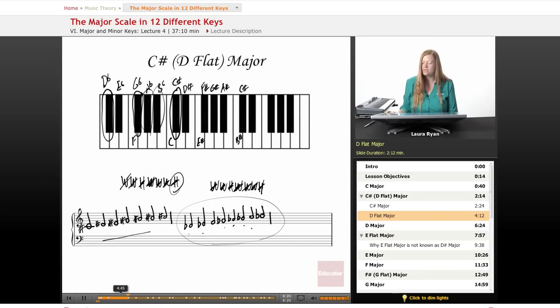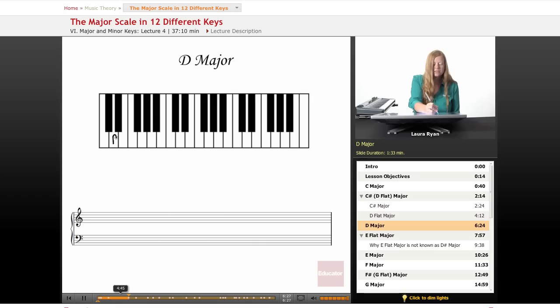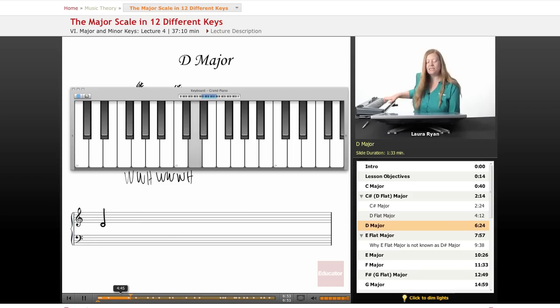Let's move on and continue with D. Here's our D and I'm going to go ahead and label the notes that we need for D. Let's use our pattern: whole, whole, half, whole, whole, whole, half. This time I'm going to play it while we write it out. Let's start on our D. From D to E, there's our whole step. E to F sharp, whole step. F sharp to G, half step. G to A, whole step. A to B, whole step. B to C sharp, whole step. C sharp to D, half step.